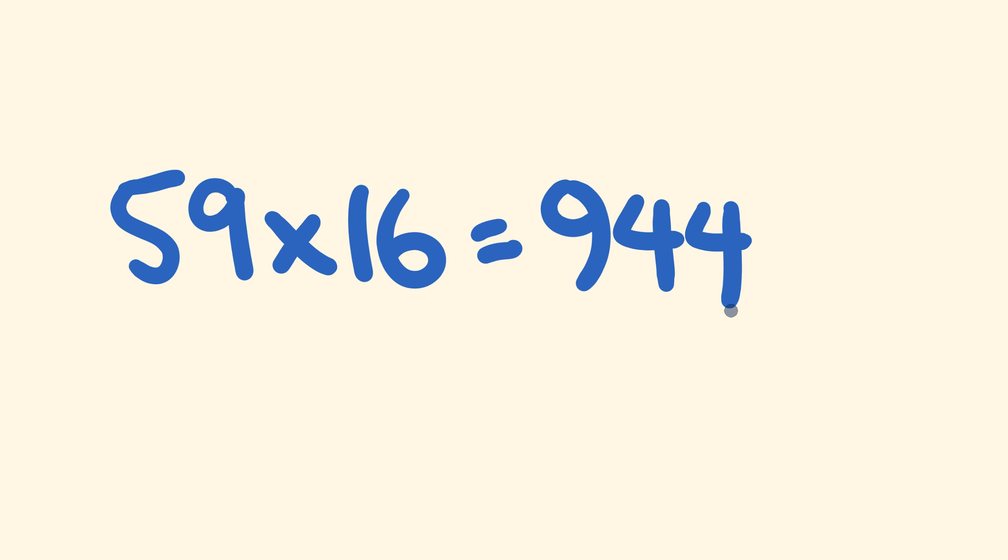So what we're going to be doing is using a method called the subtraction method, which can be used to multiply any two two-digit numbers together pretty quickly. So let's have a look at the example here.